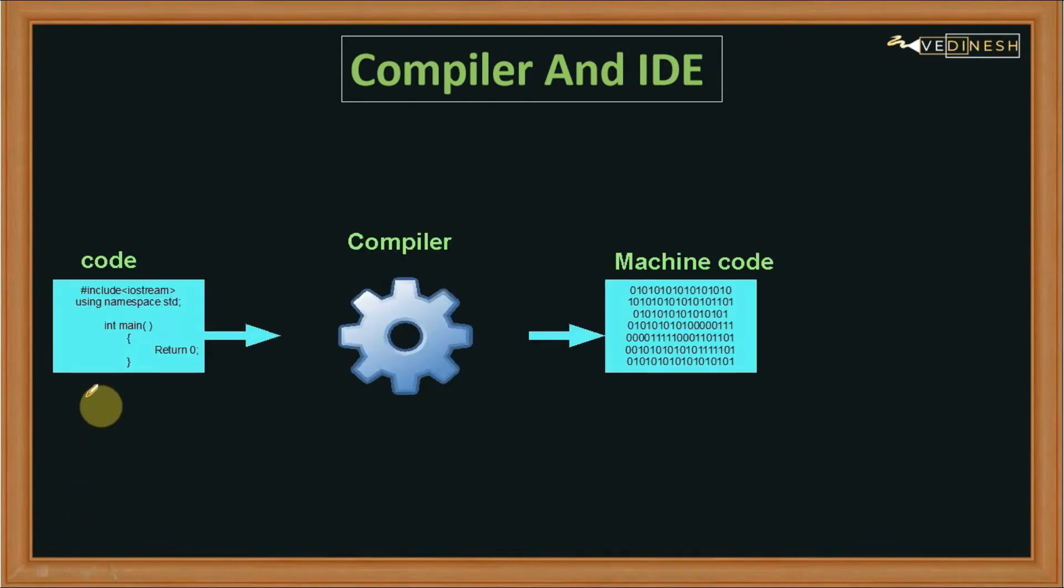Here is our code that is written in C++. This code is given to the compiler which will convert it to machine code. Machine code is nothing but in the form of zeros and ones which is only understood by the computer.